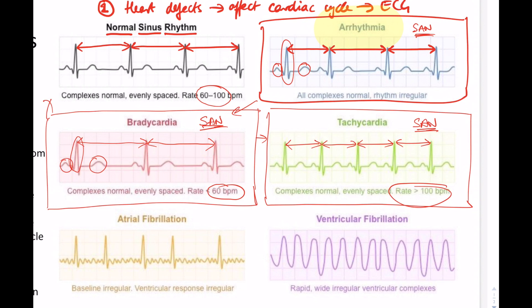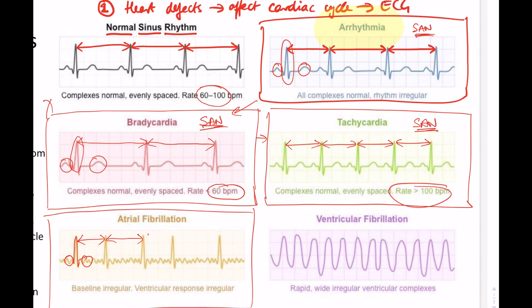Next, atrial fibrillation: the QRS complex is still present, but there are two major differences. First, the P wave cannot be clearly identified, meaning atrial contraction is not occurring normally. Second, the T wave — associated with diastole — also cannot be identified. Additionally, the distances between QRS complexes are irregular, indicating a form of arrhythmia as well, meaning the timing between cardiac cycles is not regular.